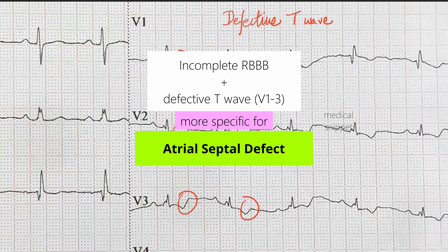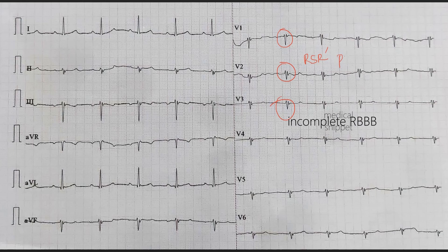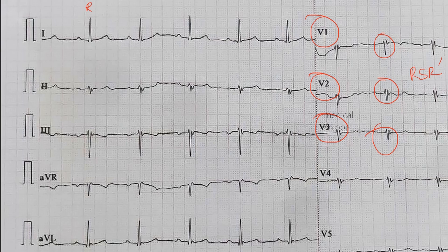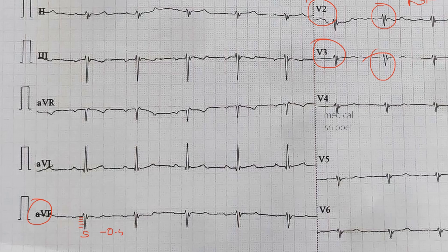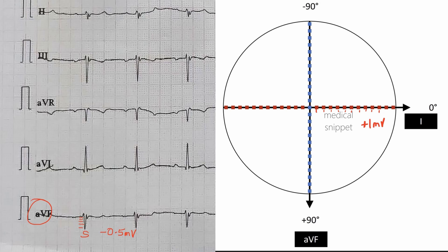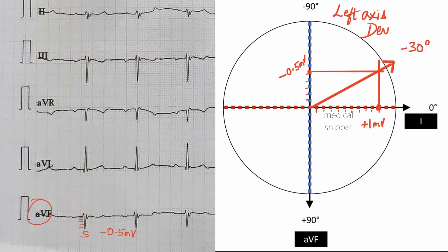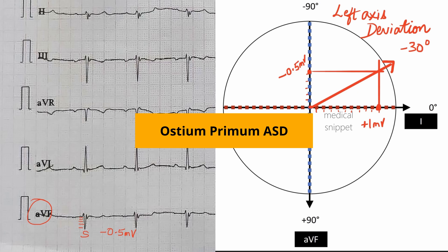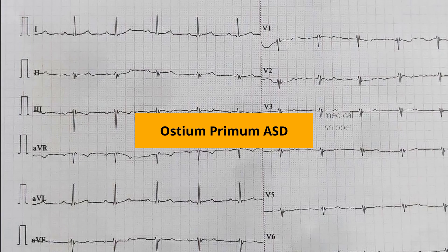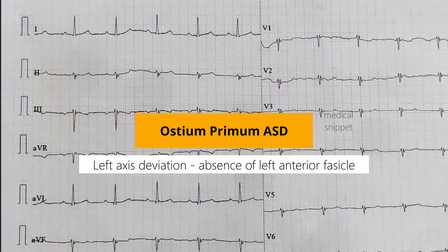Let's look at another ECG. There is incomplete right bundle branch block — that is RSR pattern in V1 to V3 — but let's calculate the QRS axis. The QRS amplitude is positive in lead 1 but negative in AVF, so there is left axis deviation. This leads to the diagnosis of ostium primum atrial septal defect. In ostium primum ASD there is left axis deviation due to the absence of the left anterior fascicle. The left axis deviation persists even after closure of the defect.